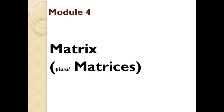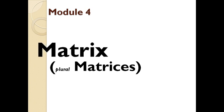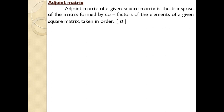Welcome back. Previously we learned in detail how to find the minor of an element as well as the cofactor of an element. Let us discuss some of the other cases that come from the matrix. Next one: adjoint of a matrix, or adjoint matrix. Adjoint of the matrix or adjoint matrix is a continuation of the cofactor of an element. The adjoint matrix of a given square matrix is the transpose of the matrix formed by cofactors of the elements of a given square matrix taken in order.